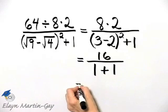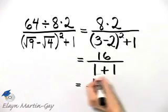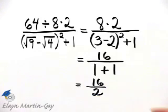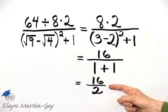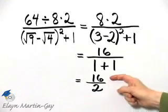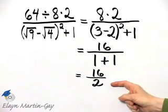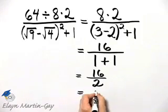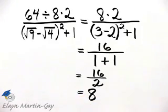Equals 16 above the fraction bar. 1 plus 1 is 2 below the fraction bar. Remember, this fraction bar means division, so now I can divide. What is 16 divided by 2? Well, 16 divided by 2 is 8. So our original expression simplifies to 8.